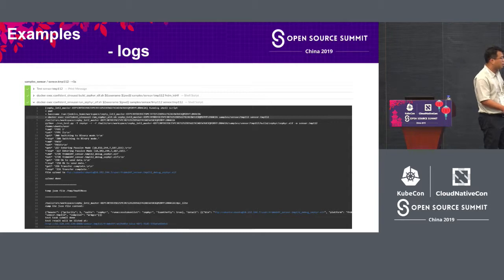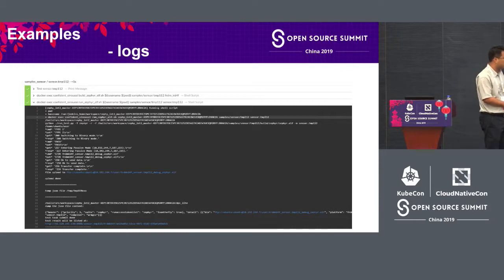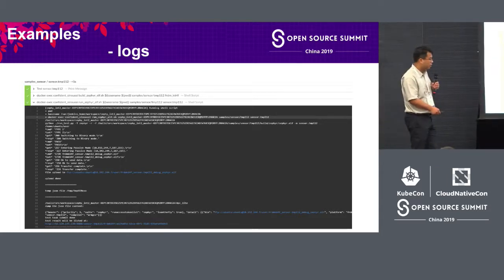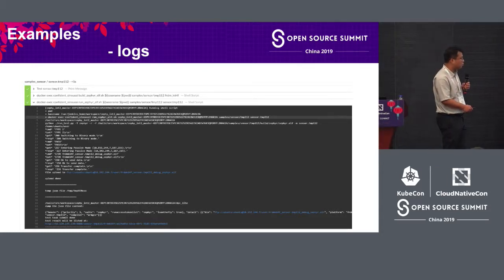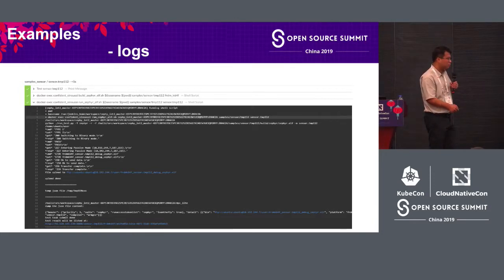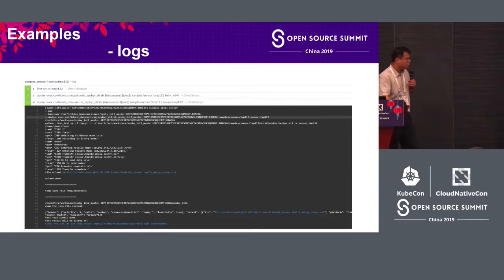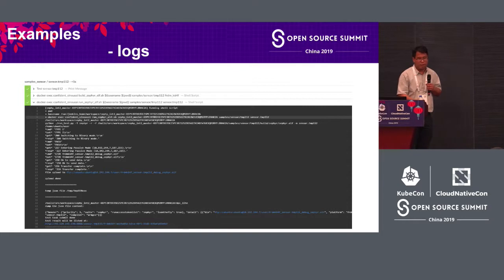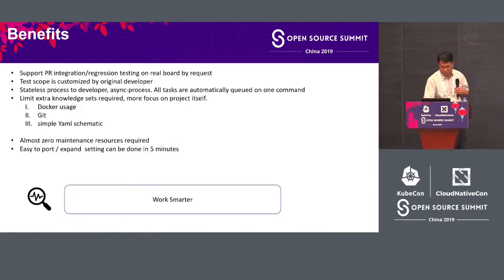A key design point: we use URLs to replace the storage method. Jenkins only stores the URL, not the actual test result in the database, which reduces the database burden. Similarly for logs, we store only the URL and inform about the test result. If it fails, you follow the URL link to check the log, which also reduces the database load.